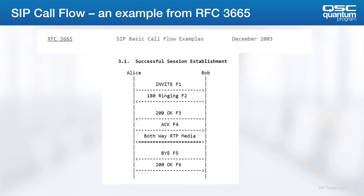After the acknowledgement you get RTP communications both ways. Then depending on who ends the call, you will see a BYE message. One big part of troubleshooting SIP is that when a call is not being completed, you can usually tell who's disconnecting first.